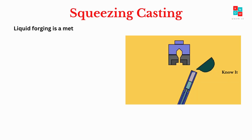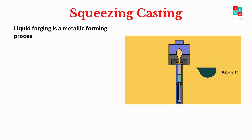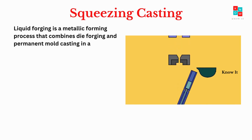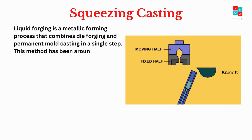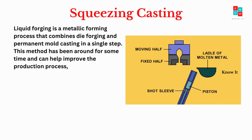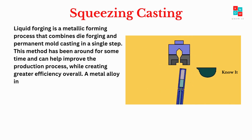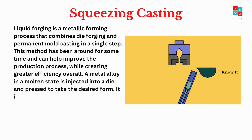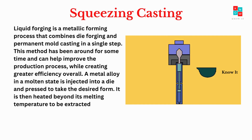Liquid forging is a metallic forming process that combines die forging and permanent mold casting in a single step. This method has been around for some time and can help improve the production process while creating greater efficiency overall. A metal alloy in a molten state is injected into a die and pressed to take the desired form, then heated beyond its melting temperature to be extracted from the die.